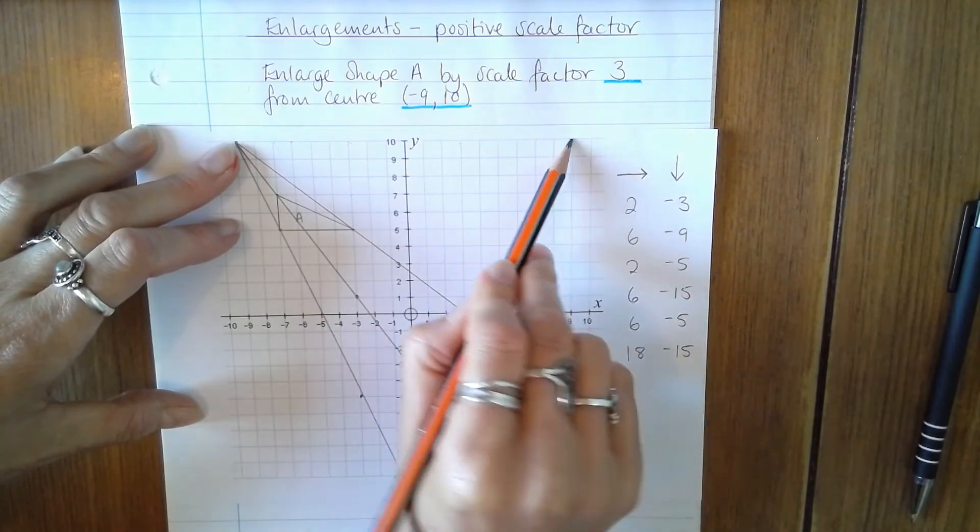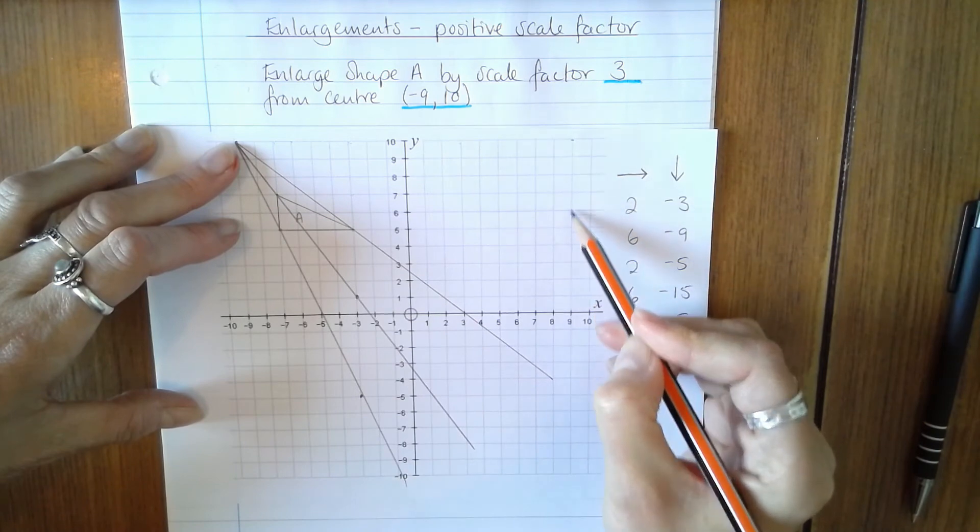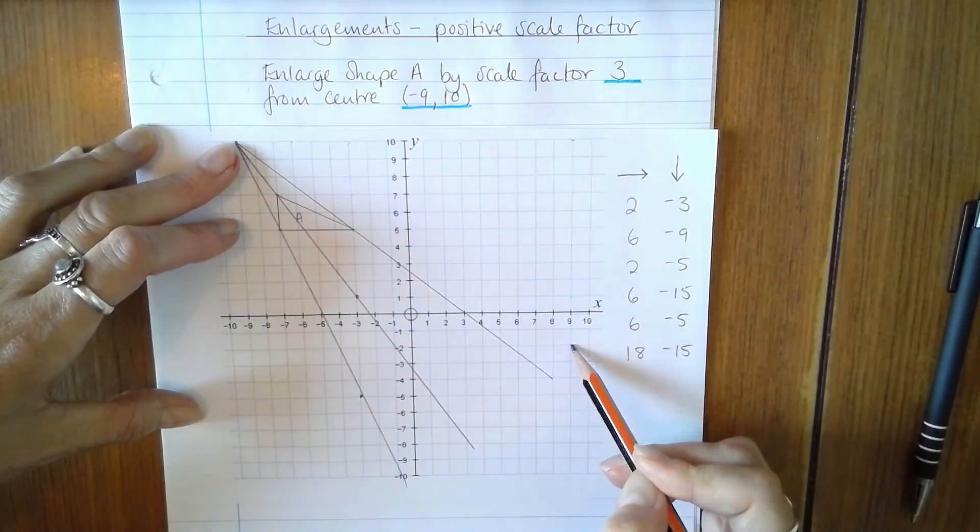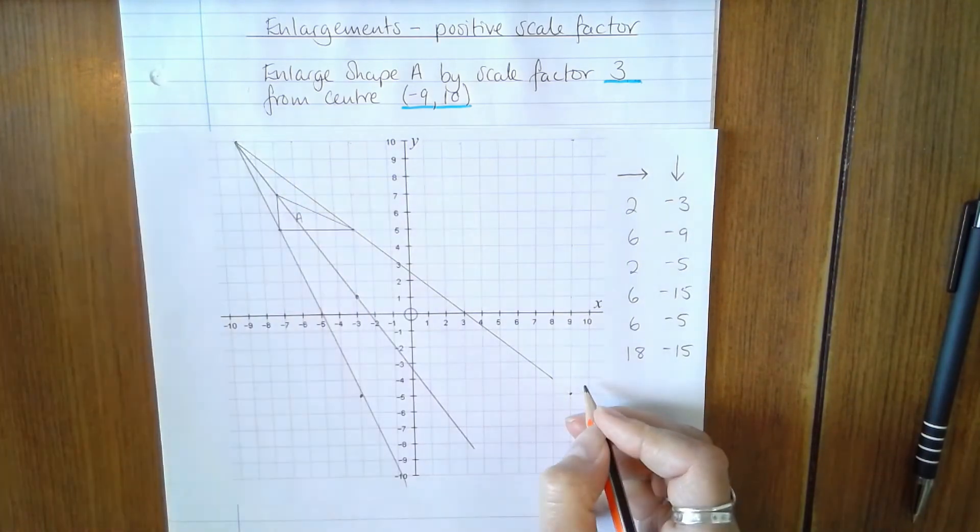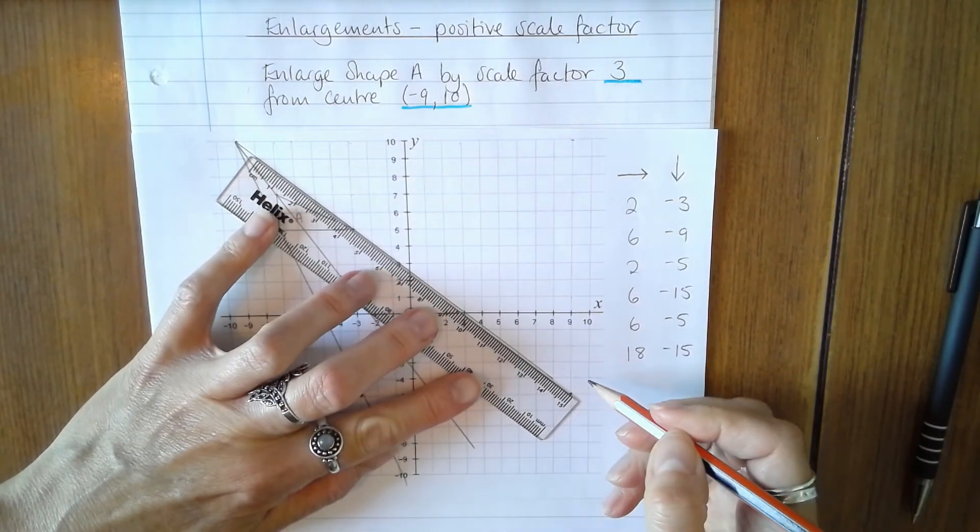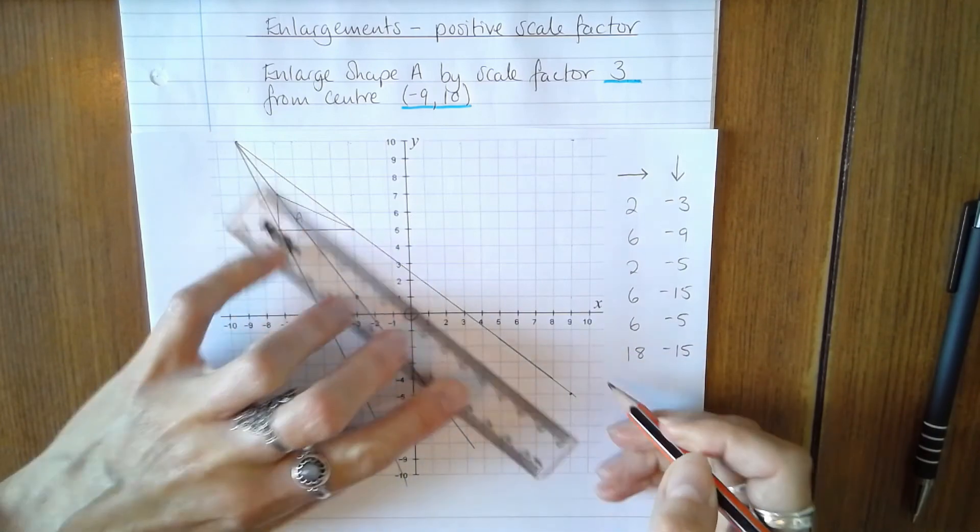And then 15 down, three, six, nine, twelve, fifteen, and I'll mark that there. But the guideline isn't quite long enough because my ruler wasn't long enough, so I'm just going to extend that line, and you can see that it does lie on the grid line.